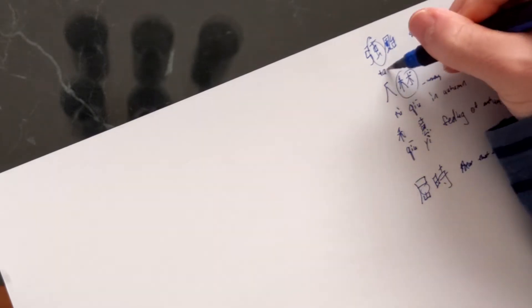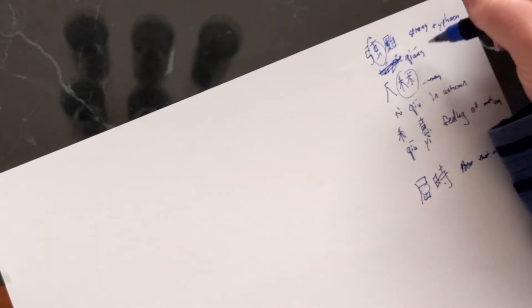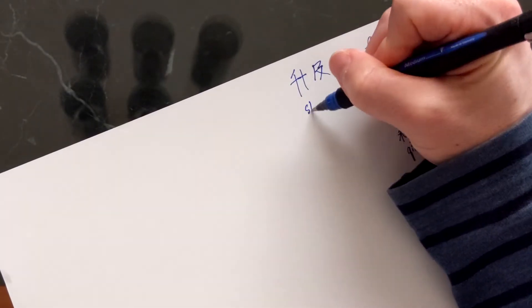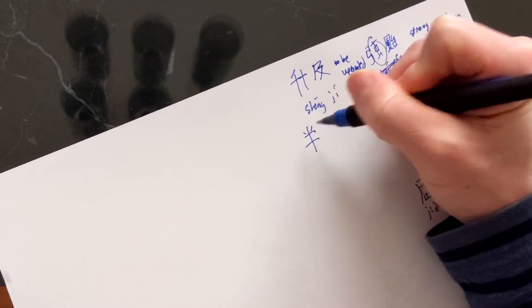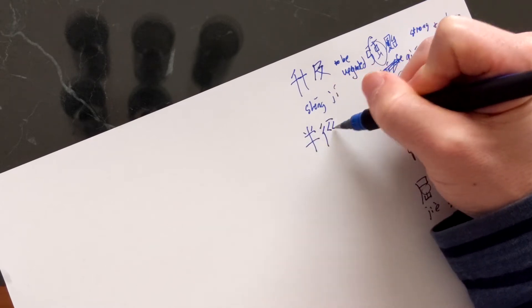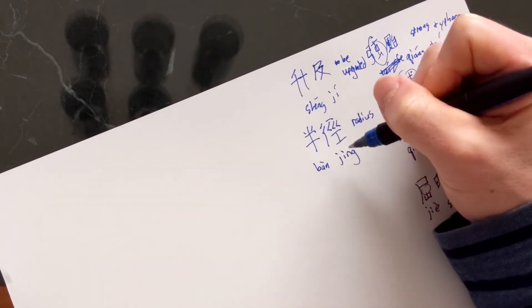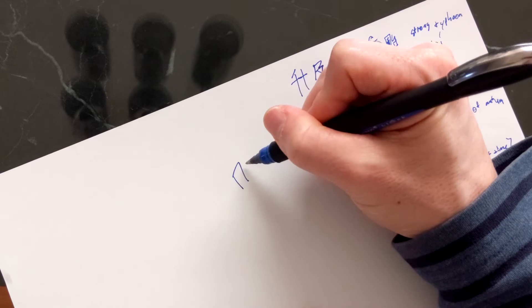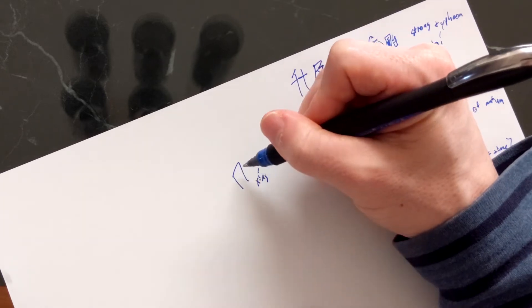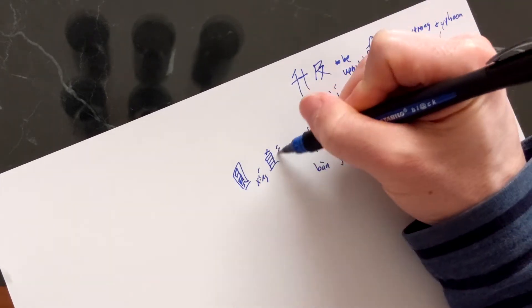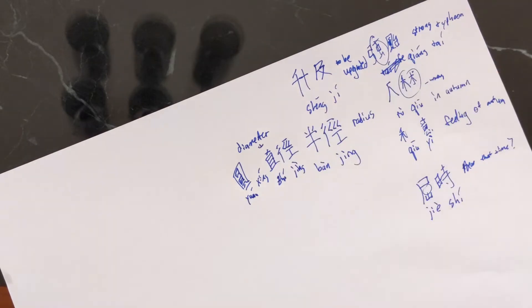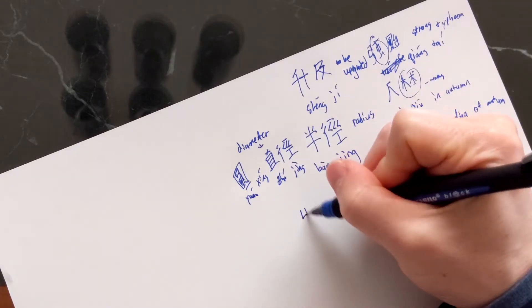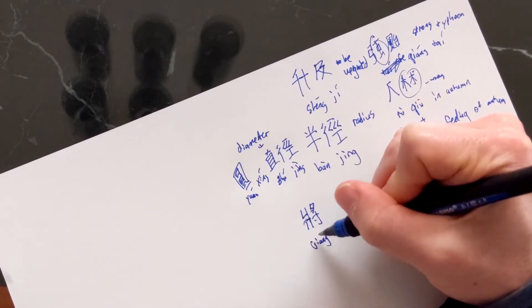I take my paper and pencil and try to remember all the words I can. For Chinese, there are three things to remember about each word: the character, the pronunciation, and the meaning. So here I'm trying to write down everything I can remember. Remembering one part of a word can sometimes help you remember a different part, or a different word entirely. Give yourself a few minutes to remember everything you can.